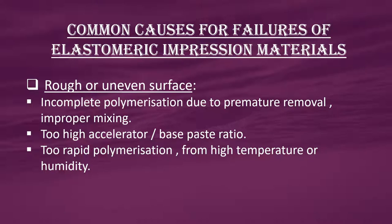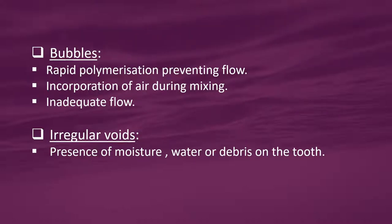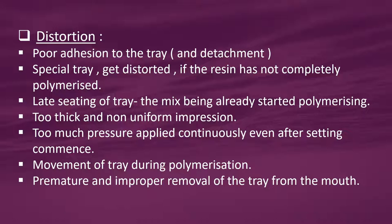Common causes for failures of elastomeric impression materials: rough or uneven surface — due to incomplete polymerization from premature removal, improper mixing, too high accelerator or base-paste ratio, or too rapid polymerization from high temperature or humidity. Bubbles — due to rapid polymerization preventing flow, incorporation of air during mixing, or inadequate flow. Irregular voids — due to presence of moisture, water, or debris on the tooth. Distortion — due to poor adhesion to the tray and detachment; special trays get distorted if resin has not completely polymerized; late seating of tray with the mix already starting to polymerize.